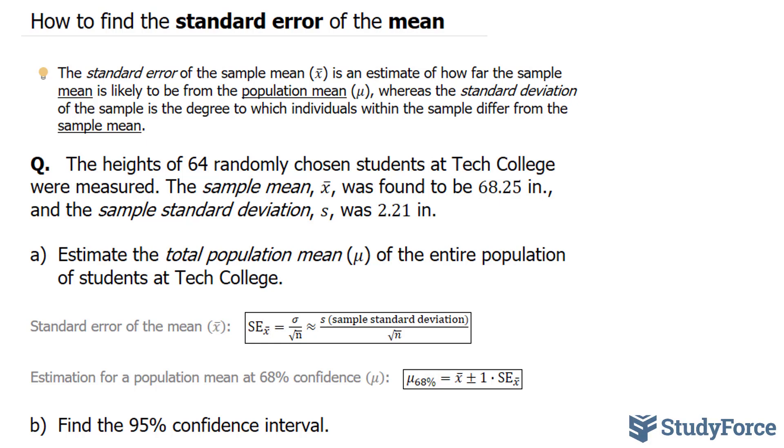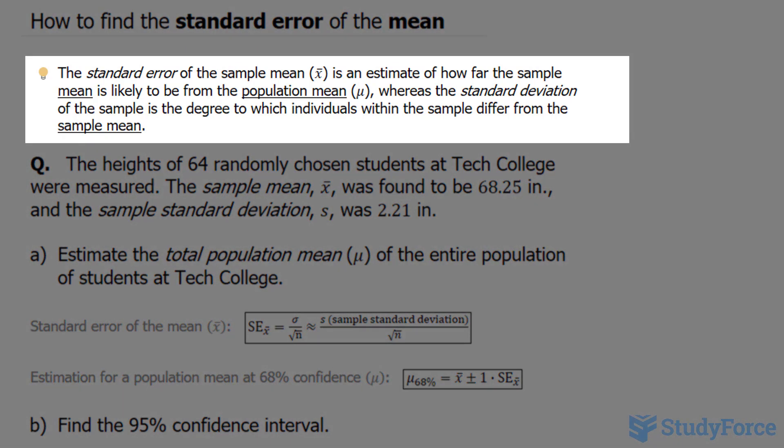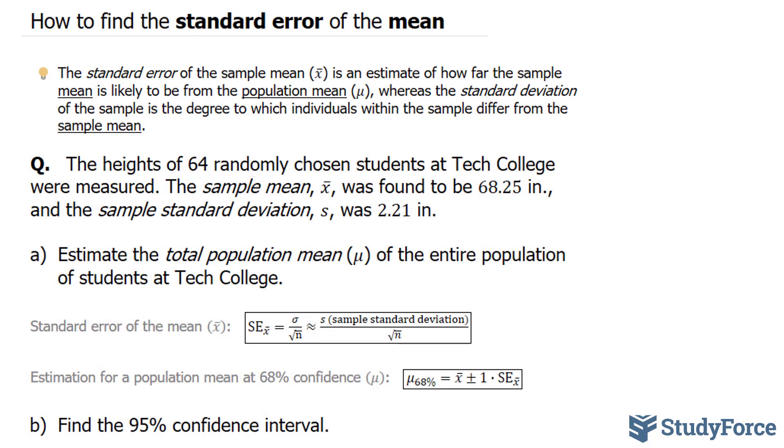I want to start off with a quick explanation of the difference between standard error and standard deviation. The standard error of the sample mean, where sample mean is represented by this x bar, is an estimate of how far the sample mean is likely to be from the whole population mean represented by this Greek letter mu, whereas the standard deviation of the sample is the degree to which individuals within the sample differ from the sample mean. So there's a big difference between standard error and standard deviation.